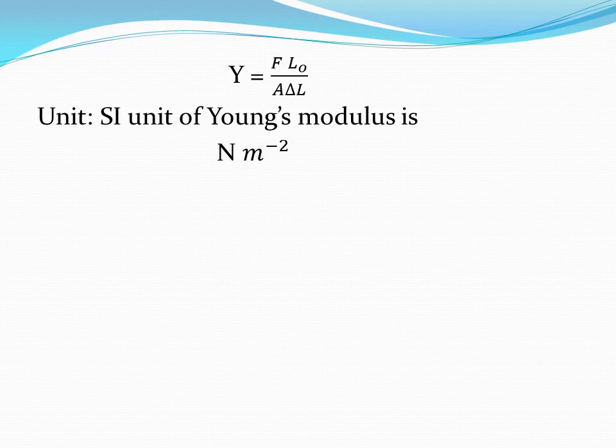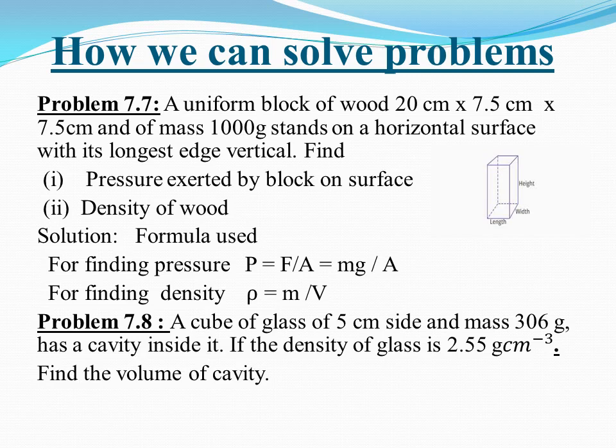Problem 7.7: A uniform block of 20 × 7.5 × 7.5 cm³ and mass 1000 g stands on a horizontal surface with its longest edge vertical. Find the pressure exerted by the block on the surface and the density of the wood. The longest side is 20 cm and the base area is 7.5 × 7.5. Use P = mg/A for pressure and ρ = mass/volume for density.